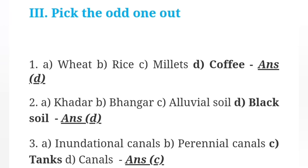Pick the odd one out. Set 1: Wheat, rice, millet, coffee — Answer: Option D, Coffee. Set 2: Colder, darker, alluvial soil, black soil — Answer: Option D, Black soil. Set 3: Inundational canals, perennial canals, tanks — Answer: Tanks.